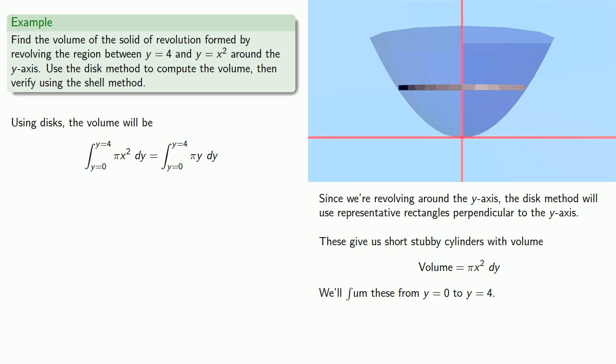So replacing x squared with y, we now have an integral in terms of y only. We'll find the antiderivative, evaluate, and so the volume of this paraboloid will be 8 pi.